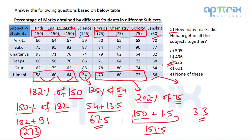Adding 252 to 273 gives a total of 525 marks for Himani across all subjects. This shows how smart calculation methods — grouping same-base percentages, swapping x% of y to y% of x — can save a lot of time. Most data interpretation questions aren't about brute calculation; the right method makes them much easier. Hope you enjoyed the lesson — do share it with more students. Subscribe the channel, share on WhatsApp and Facebook, and see you in the next session!